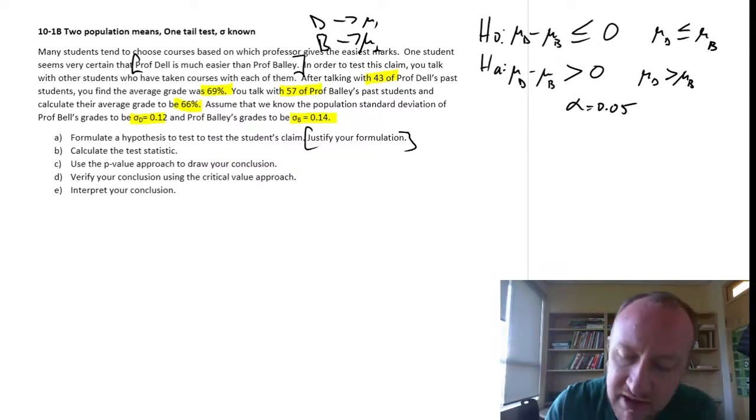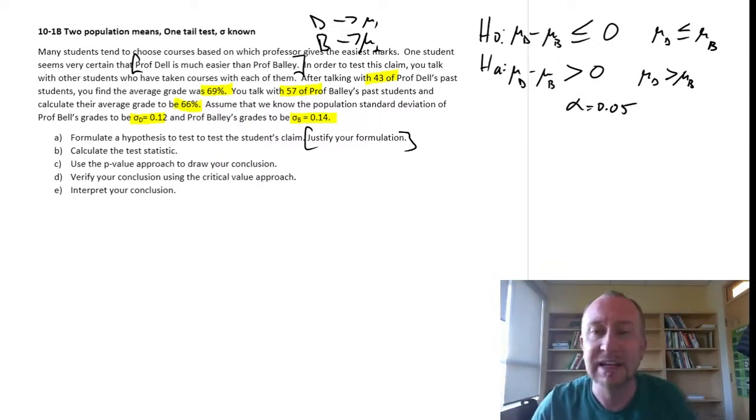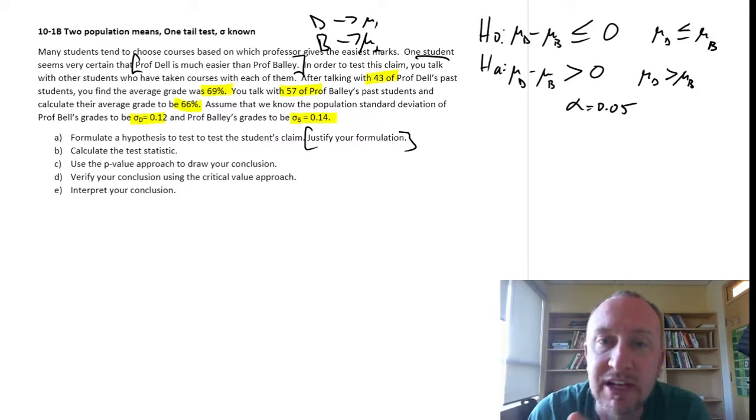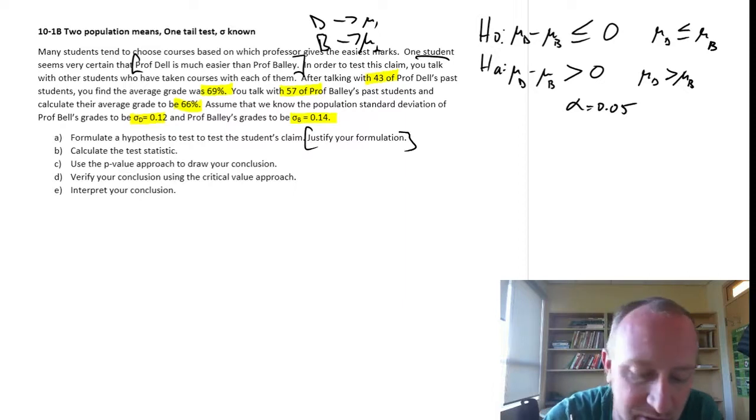And then it's a little bit easier I think to keep track of which population is what. So let's go ahead and we'll do this alpha 0.05. Justify our formulation. Well, here I formulated this in such a way that if the evidence supports the null hypothesis then my classmate, this other student, I don't have evidence to support the claim that that student is making.